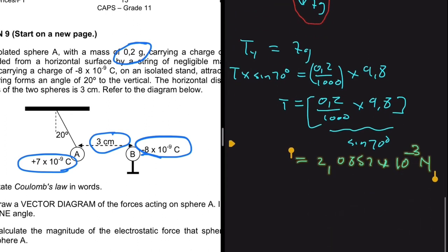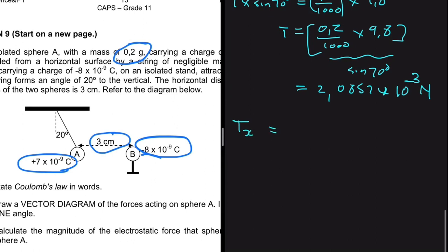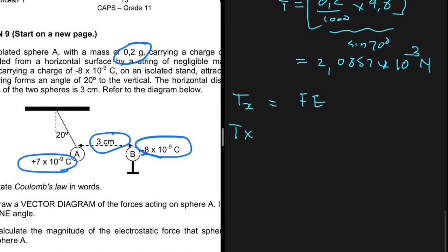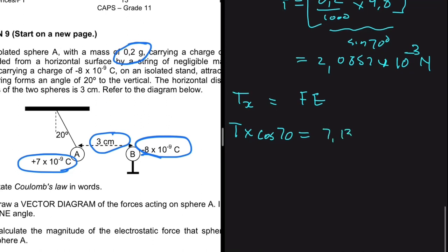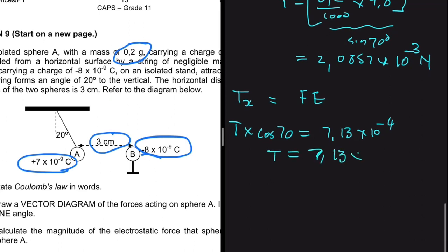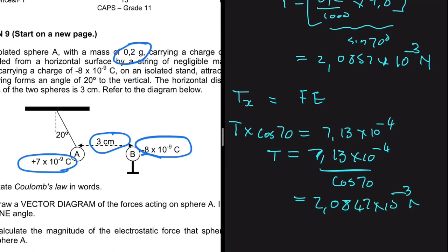Method 2: the X component of tension equals the electrostatic force. T times cosine of 70 degrees equals Fe, which we calculated in 9.3 as 7.13 times 10 to the minus 4 newtons. Dividing both sides by cosine of 70, the tension equals 7.13 times 10 to the minus 4 divided by cosine of 70, which gives 2.0847 times 10 to the minus 3 newtons.